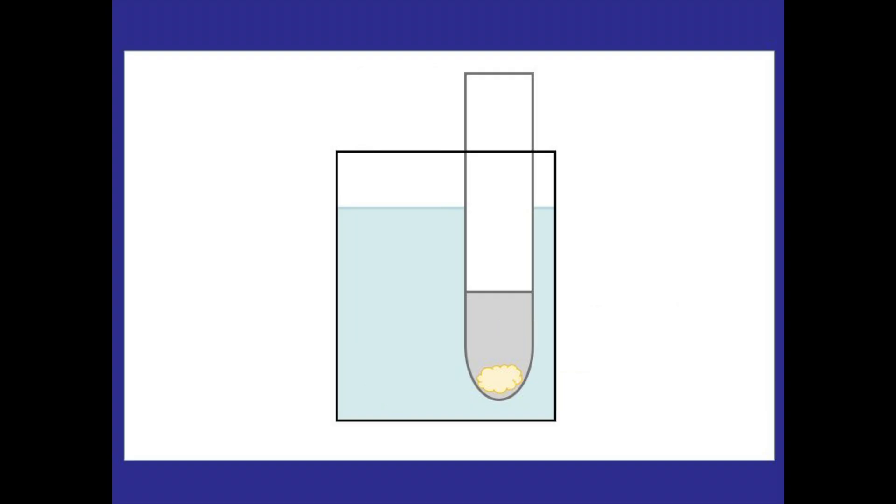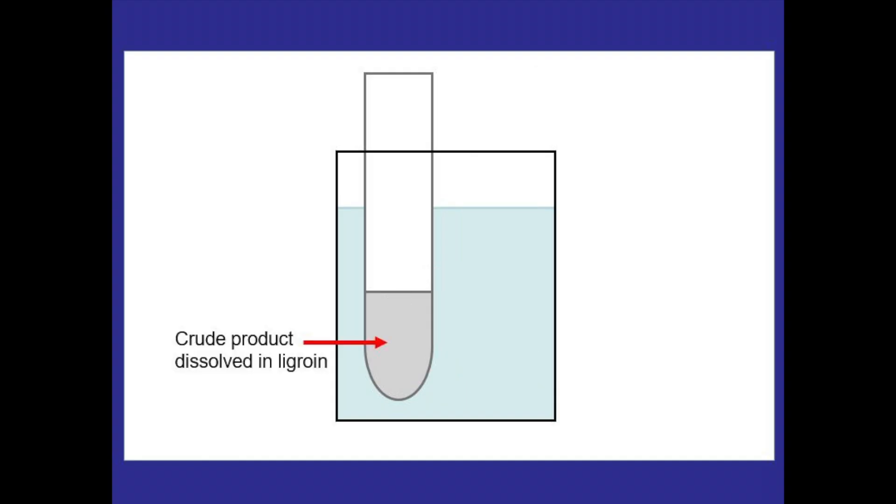From here we can take a piece of cotton and put it in the test tube just on top of the contamination. Then using a Pasteur pipette, start transferring the ligroin solution into a new clean test tube. The cotton will prevent the contamination from moving with the solution into the pipette, leaving the crude product dissolved in ligroin by itself, and then we can continue the recrystallization process like normal from here. Now all of this should be done in a hot water bath to ensure that the crude product remains dissolved in that ligroin solution.